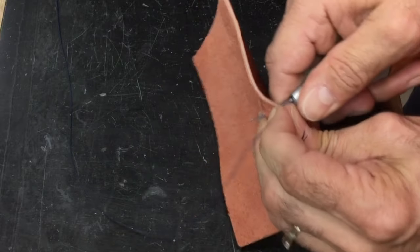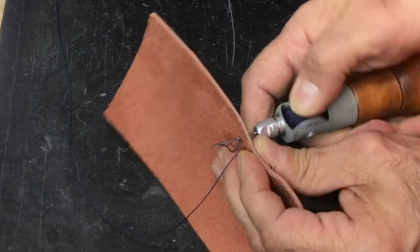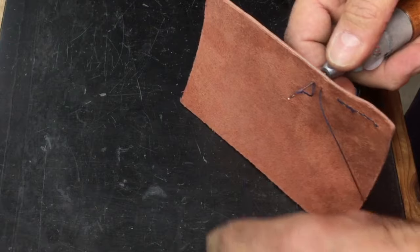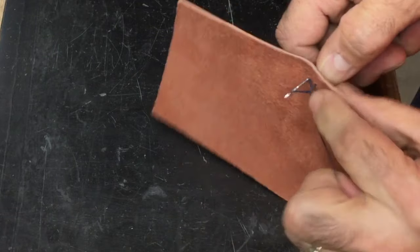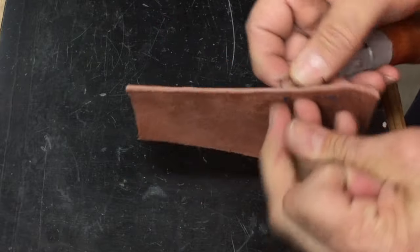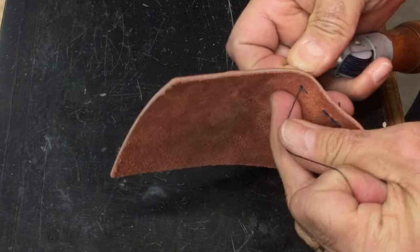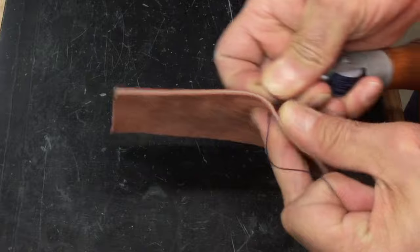You pull it back and get a loop just like in a sewing machine. Pull that through and pull your needle back. There's going to be a lock in the middle of your leather - you want to lock right in the center.